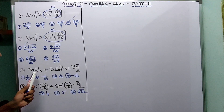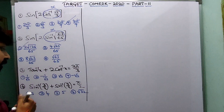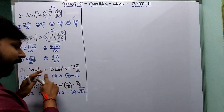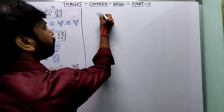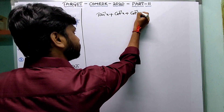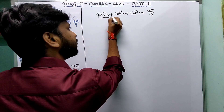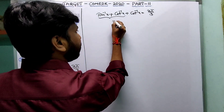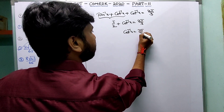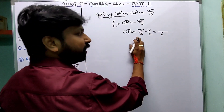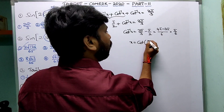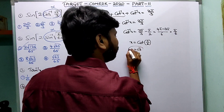Question: tan⁻¹x + 2cot⁻¹x = 2π/3. Using the known result tan⁻¹x + cot⁻¹x = π/2, rewrite 2cot⁻¹x as cot⁻¹x + cot⁻¹x. Then π/2 + cot⁻¹x = 2π/3, so cot⁻¹x = 2π/3 - π/2 = π/6. Therefore x = cot(π/6) = √3. The third option is correct.